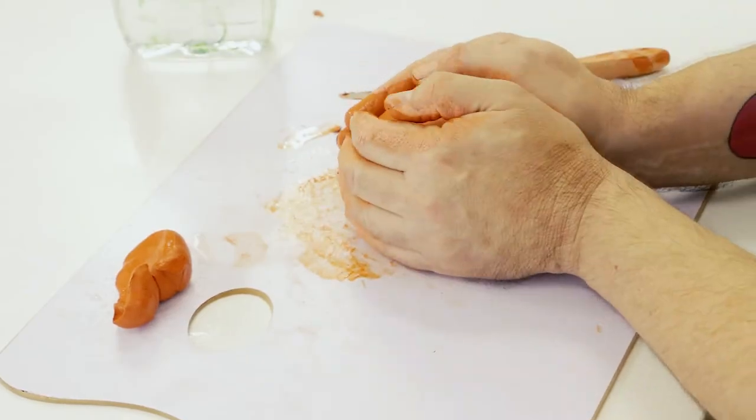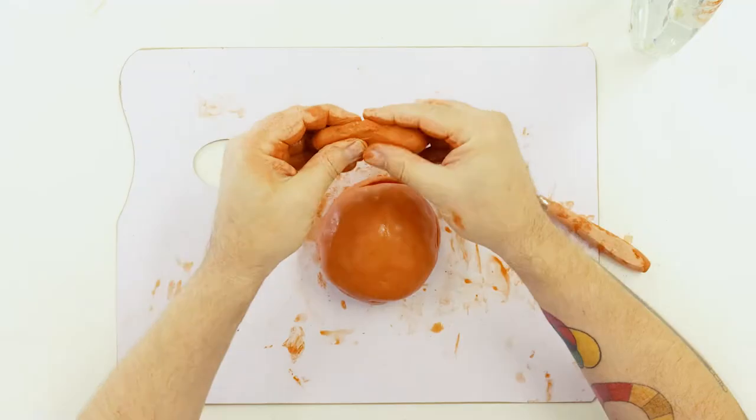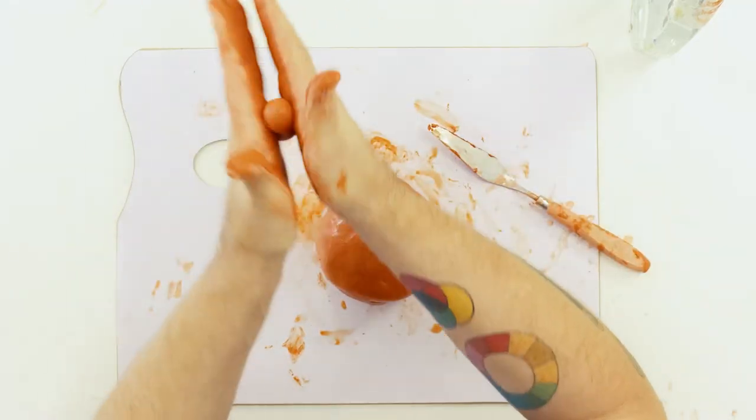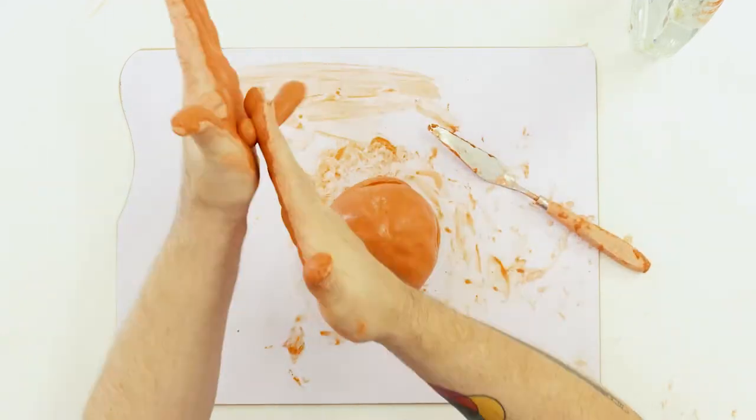Lay the two halves together and smooth them out so it forms a roundish shape. To create the cross roll a small sausage shape, lay it flat on the board and cut it in half with the palette knife.